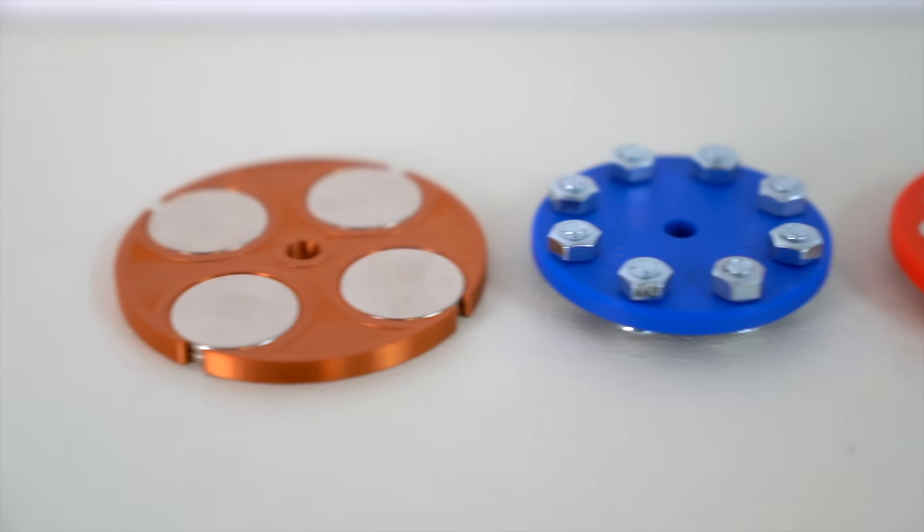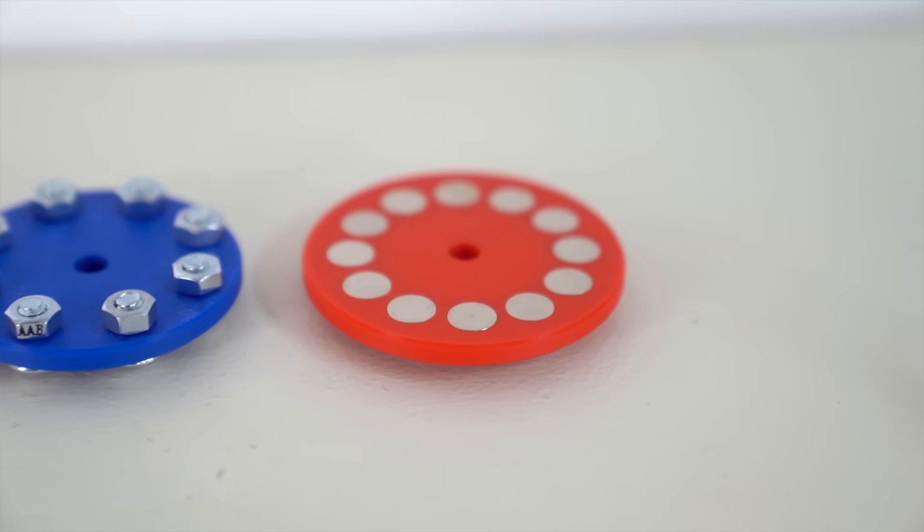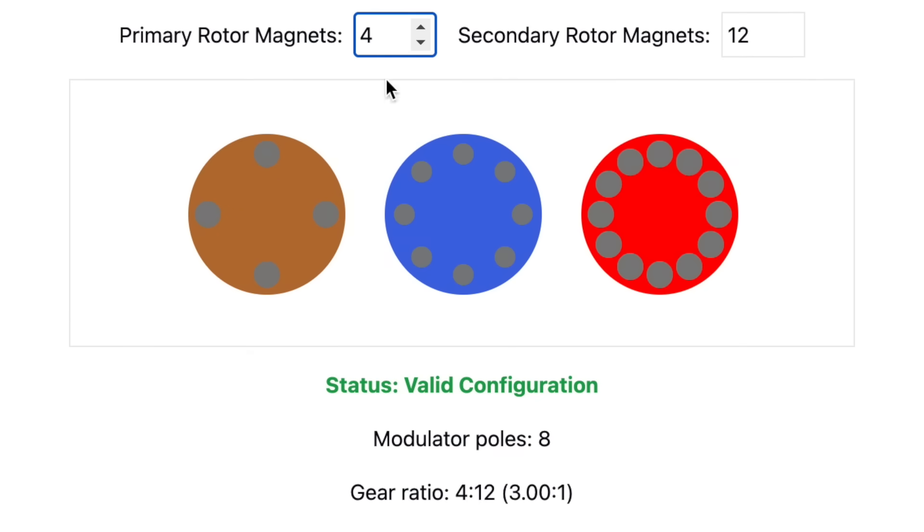So here we have our four primary magnets, our eight stator poles, and our 12 secondary magnets. And the cool thing is, by changing the number of magnets and nuts and bolts, we could actually change the gear ratio.